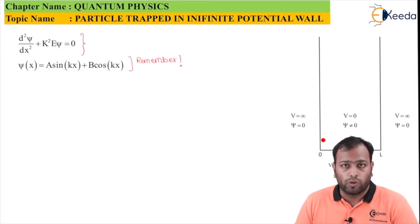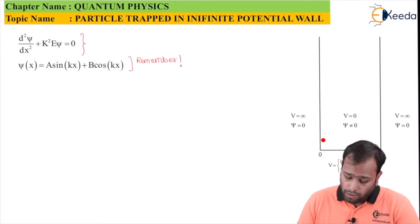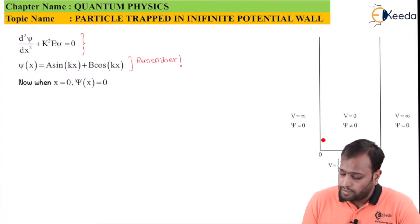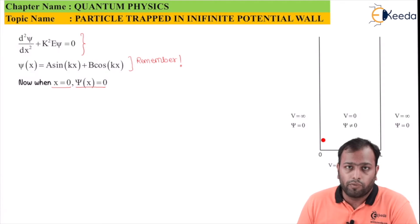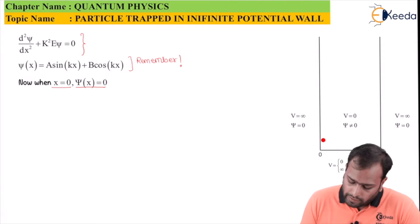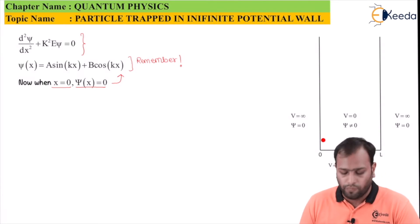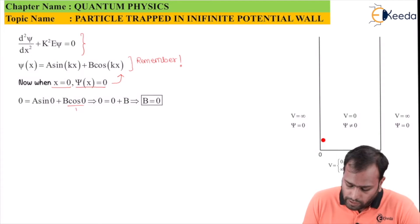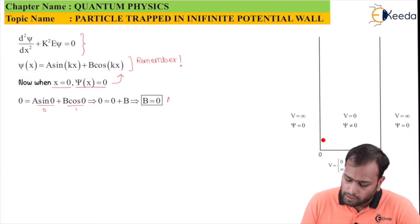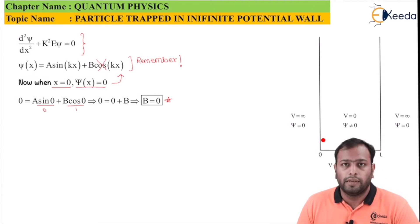Applying the boundary condition at x = 0: ψ(0) = 0. Plugging into the equation gives 0 = A sin(0) + B cos(0), which simplifies to 0 = 0 + B, since sin(0) = 0 and cos(0) = 1. Therefore B = 0, and the cosine term drops out of the equation.